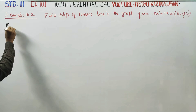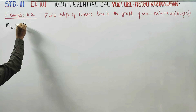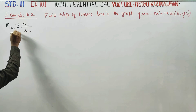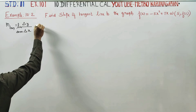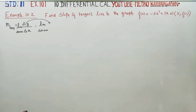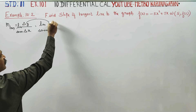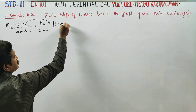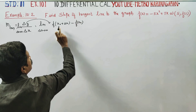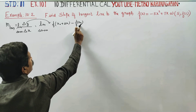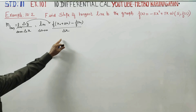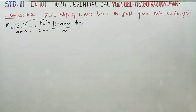The slope of the tangent line formula goes like this: limit as delta x turns to 0 of delta y by delta x. Delta y is a change in the value of y, that is f of x₀ plus delta x minus f of x₀, which is the change in the value of y. This divided by delta x is the slope formula.